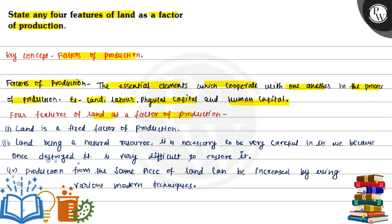First, land is a fixed factor of production. Land, being a natural resource, it is necessary to be very careful in its use, because once destroyed it is very difficult to restore it.